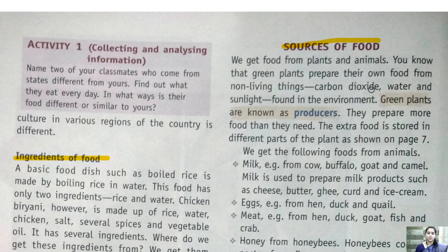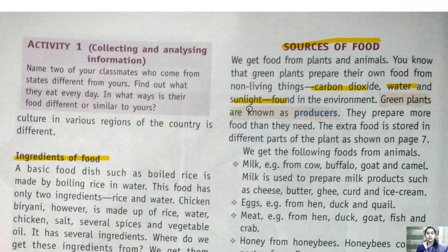We have also seen this in the chapter 'Living Organisms and Their Surroundings.' Green plants do not depend on other animals for the preparation of food — they prepare their food on their own, and hence they are called producers or autotrophs. They prepare food with the help of carbon dioxide, water, and sunlight through the process called photosynthesis. Green plants prepare more food than they need, and the extra food is stored in different parts of the plant.